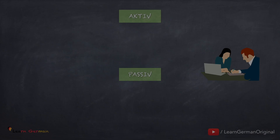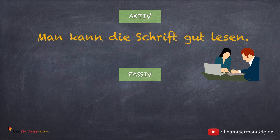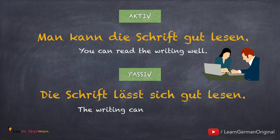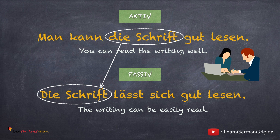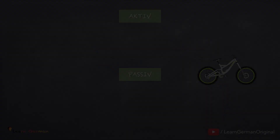Hier ist der nächste Satz: Man kann die Schrift gut lesen. In Passiv mit sich lassen sagt man: die Schrift lässt sich gut lesen. Der Akkusativobjekt von dem aktiven Satz ist jetzt der nominative Subjekt in dem passiven Satz. In dem passiven Satz braucht man keinen Täter, deshalb man fehlt weg.